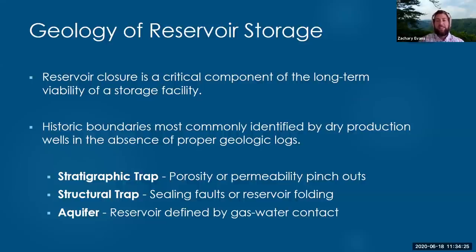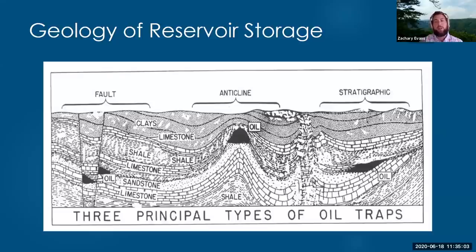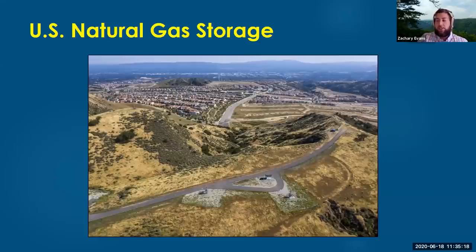Historically in the US, when converted fields had their storage boundaries drawn, it was simply taking a production map and drawing a ring around dry holes versus productive wells — not a very scientific method. Given the age of these assets, you can run into migratory concerns from that lack of precision. Whether it's a stratigraphic trap, a structural trap, or an aquifer bounding things by the gas-water contact, you need to ensure storage containment. That is easily the most important aspect.